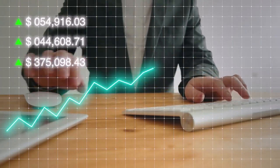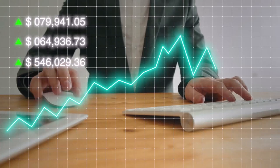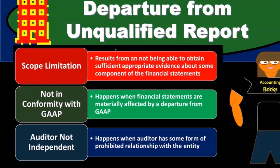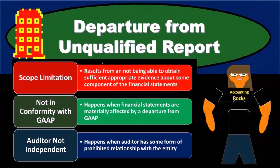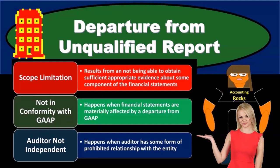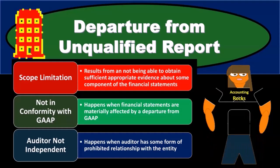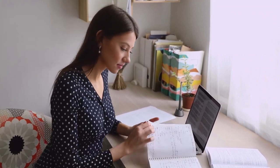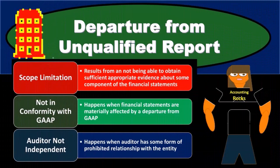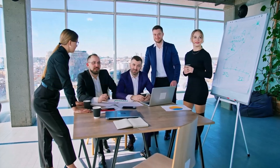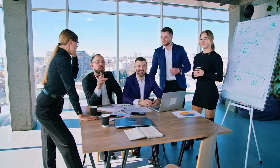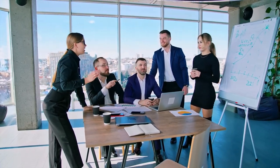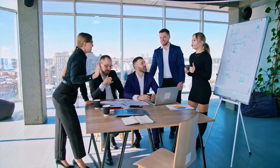You basically want to have that standard report memorized, or at least have the outline of it in mind, and then think about what would happen to it if we had departures. How do we modify that report? If you're going to memorize any report, you almost want to memorize at least some of the wording for the standard unqualified report, and then think about those areas where there could be departures. If you know the structure of the standard report, you can think about what modifications would need to be in place given these circumstances.